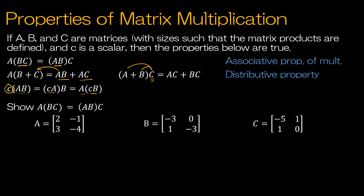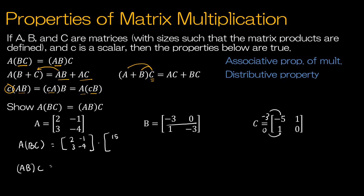We're going to verify A times (BC) equals (AB) times C. First, I'll multiply B times C. So A is 2, negative 1, 3, negative 4. Computing BC: negative 3 times 0 gives 15 plus 0, which is 15, and negative 3 plus 0, which is negative 3. Then negative 5 plus negative 3 is negative 8, and 1 plus 0 is 1.